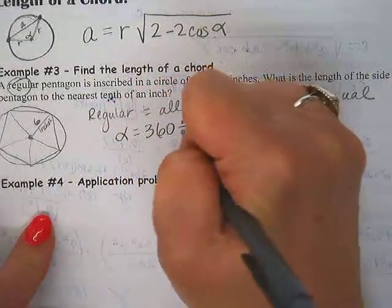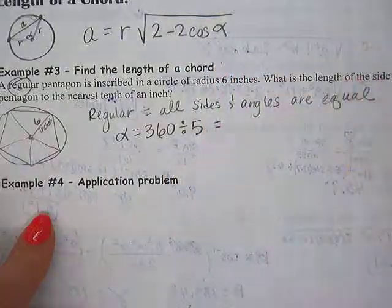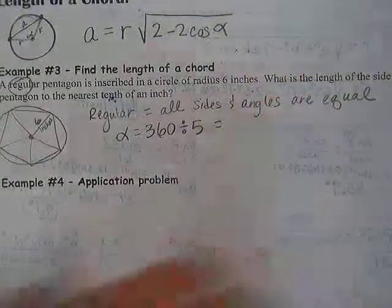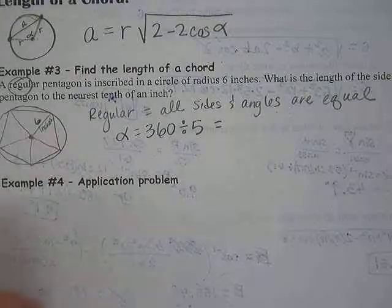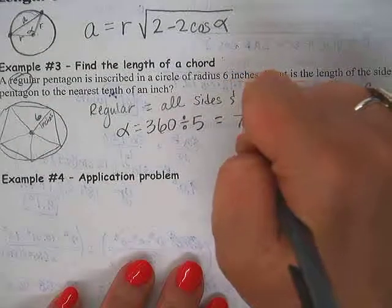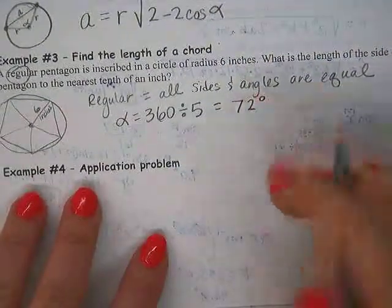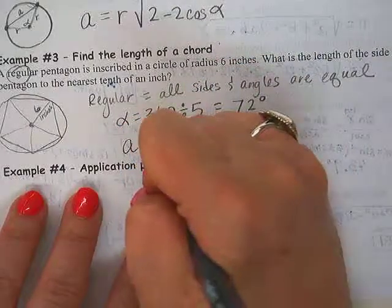So to find our angle alpha, we just take 360 and we divide by the number of sides in our regular pentagon, which is five, and we get an angle. So what would that be? Okay, so 72 degrees for the angle.